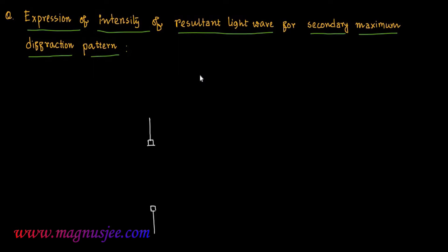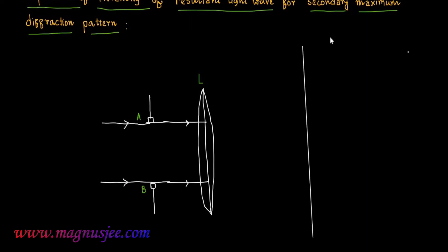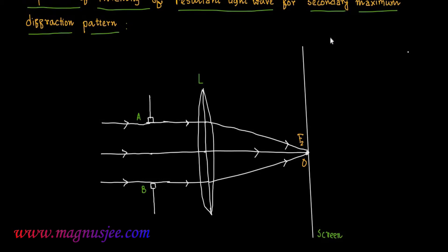We can draw a slit or aperture AB. AB is the single slit or aperture, and parallel rays are passing through this aperture AB. A convex lens L2 is placed at a certain distance from the aperture AB, and the parallel rays incident on this convex lens L will refract and converge on the screen at the point O, that is at the second focus F2 of the lens L.